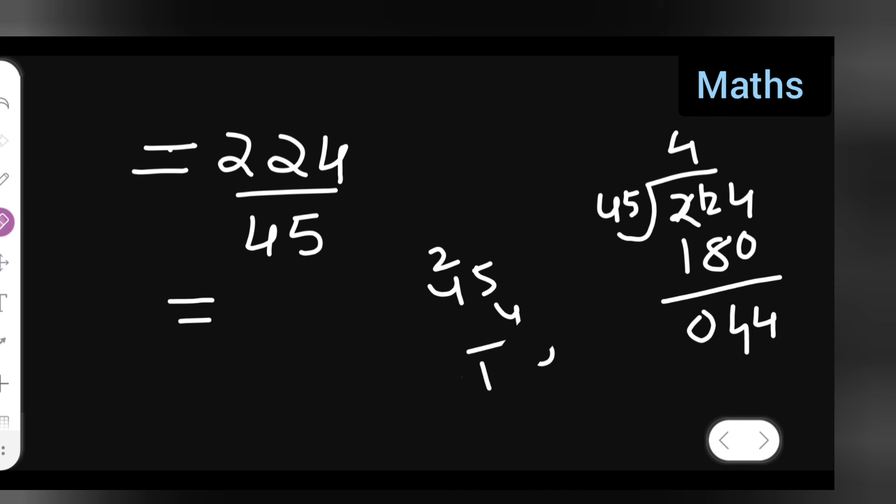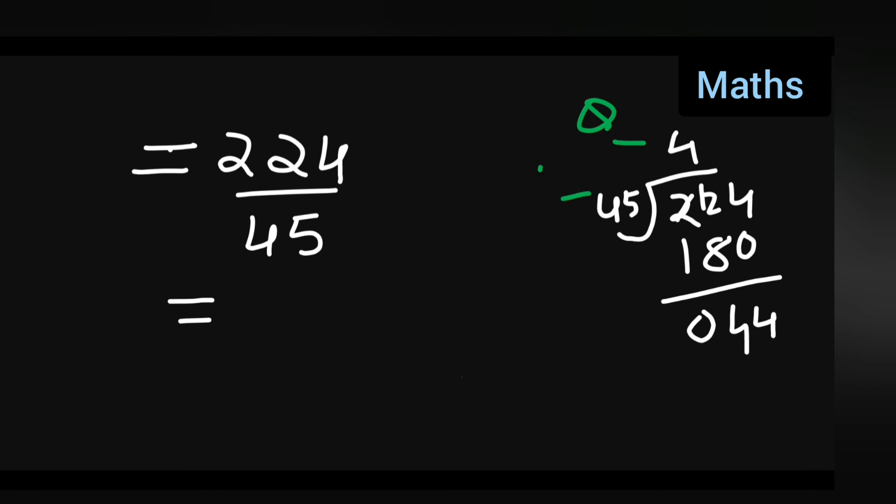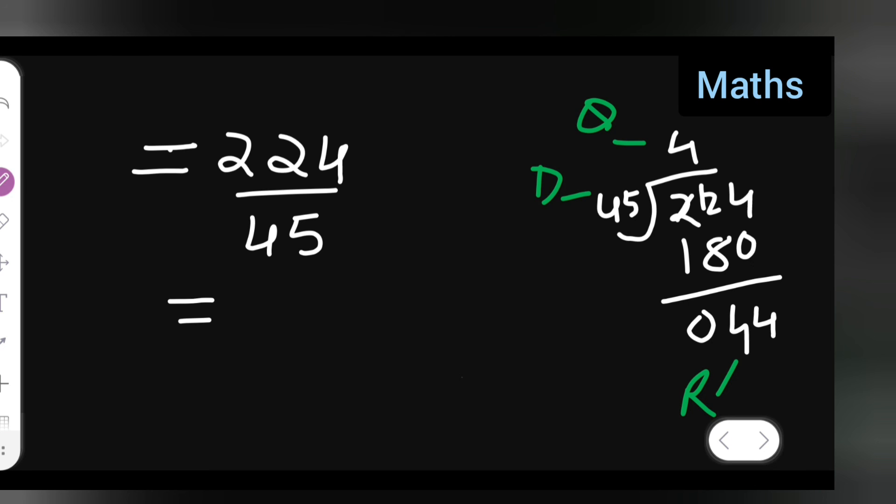Now let us rub this part. Your quotient, this is your D, and this is your R. So this should be in this form: 4 is quotient, remainder 44 upon 45.